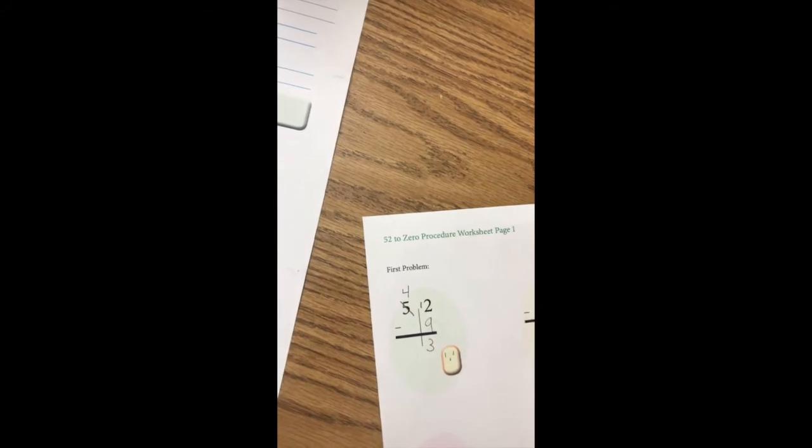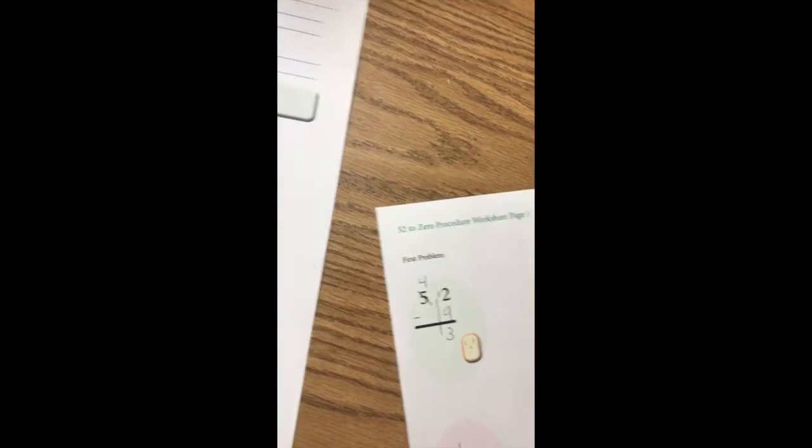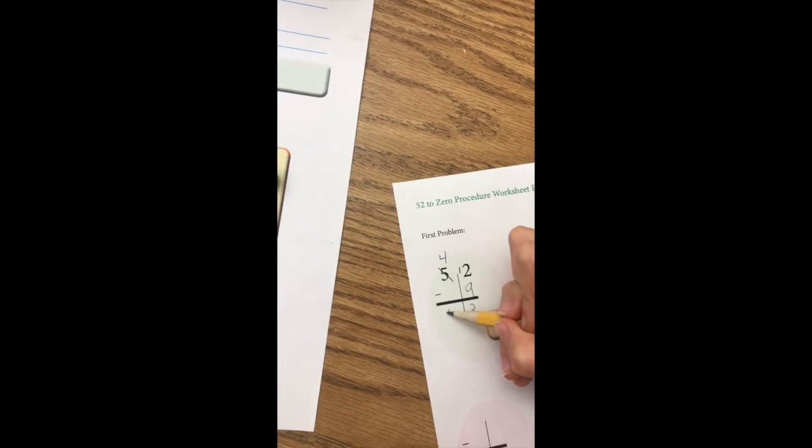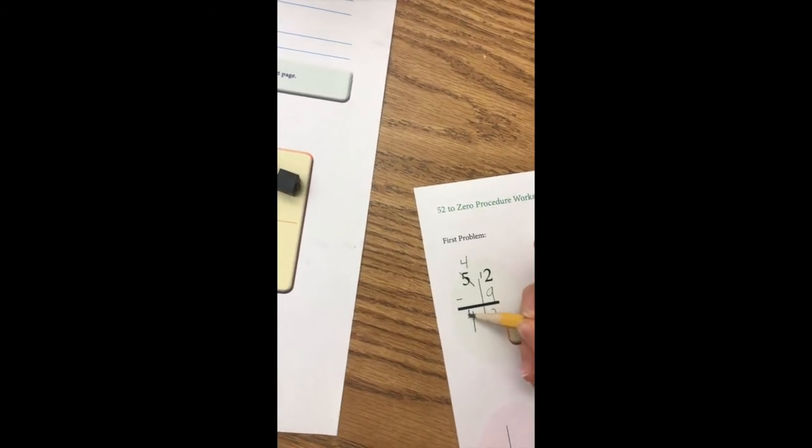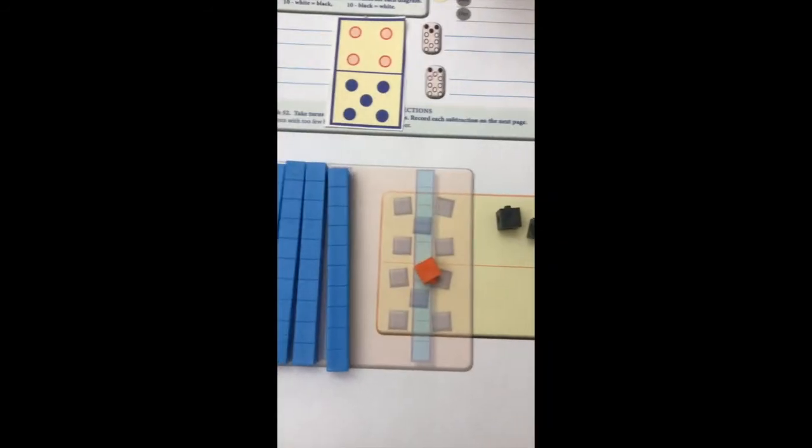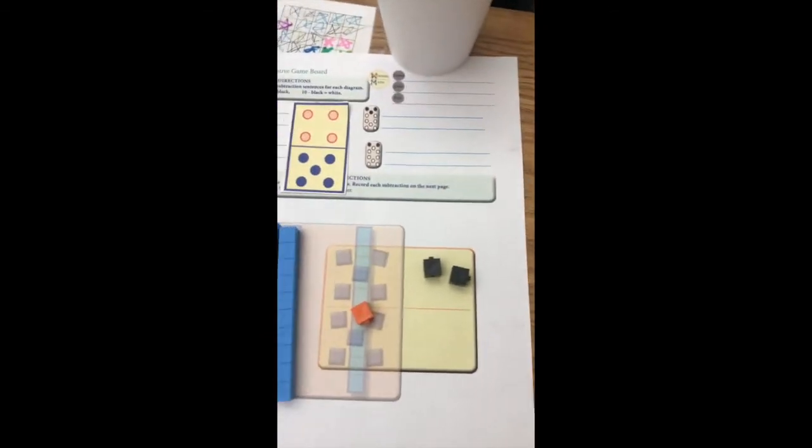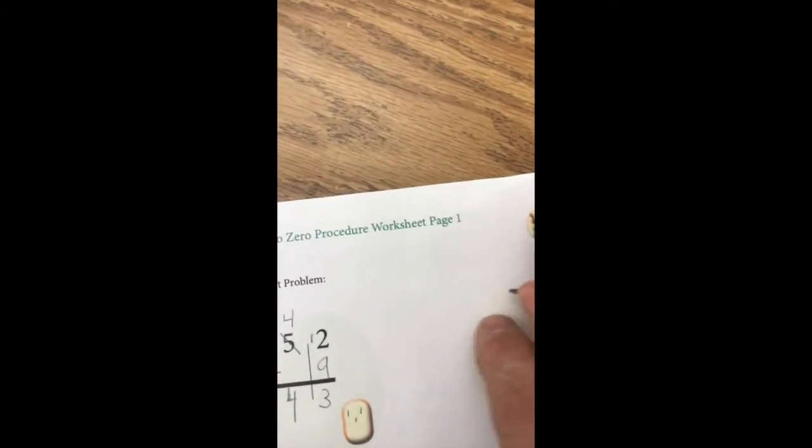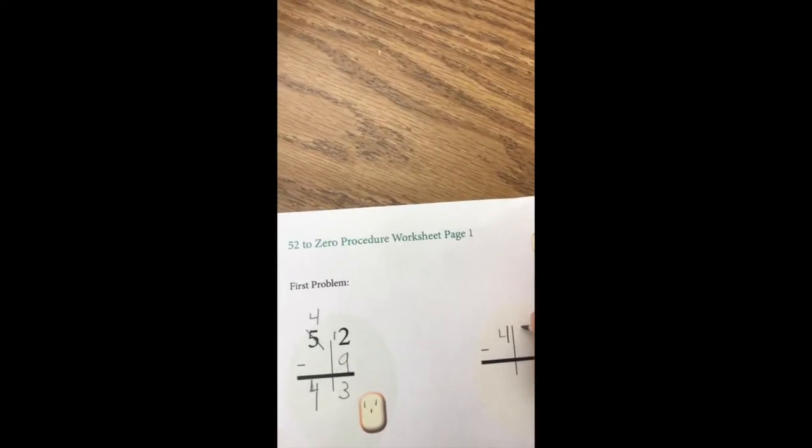Yes. Write your three right in the top. Perfect. How many sticks do you have left? Four. Correct. Where does that go? Right here. Perfect. All right. So how many do you have left? Forty-two, correct? Forty-three? Yeah. All right. That's what you're going to start your next problem with. Forty-three up here. Excellent.